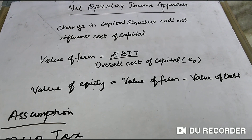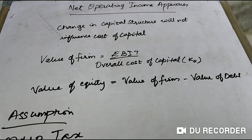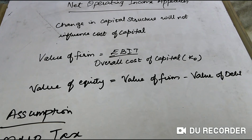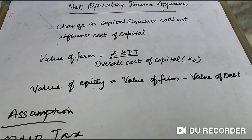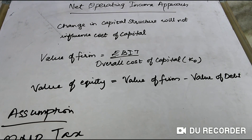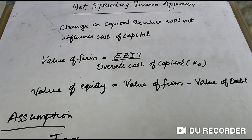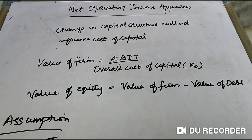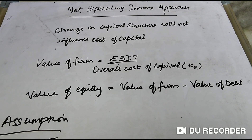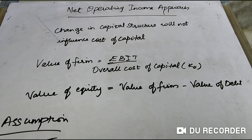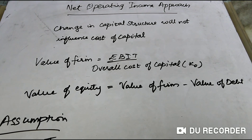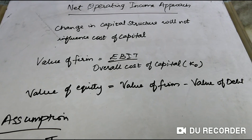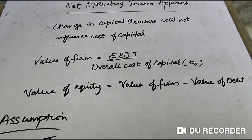Today our topic is Net Operating Income approach. This is the second capital structure theory, which is opposite of the Net Income approach studied previously. That theory said capital structure will affect the value of the firm and influence the cost of capital. Here, we are saying a change in capital structure will not influence cost of capital.